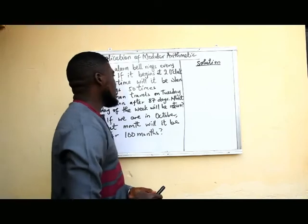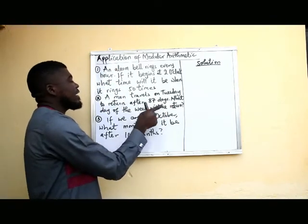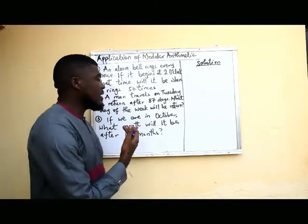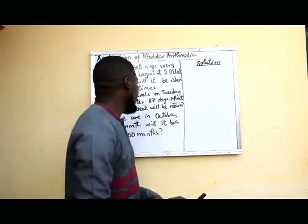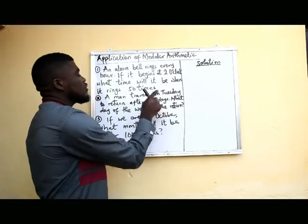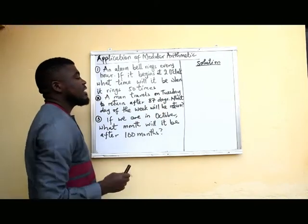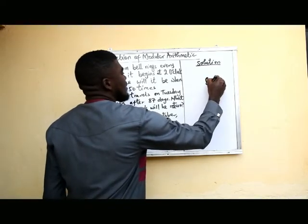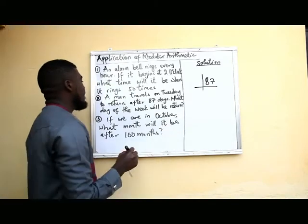Now let's look at the second question. A man travels on Tuesday and returns after 87 days. What day of the week will he return? We are dealing with days of the week, and we know there are 7 days in a week that keep repeating. The man travels on Tuesday and returns after 87 days, so with the help of modular arithmetic we are going to divide 87 by 7.